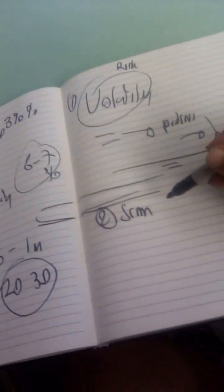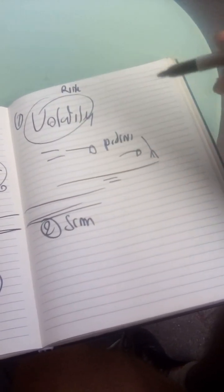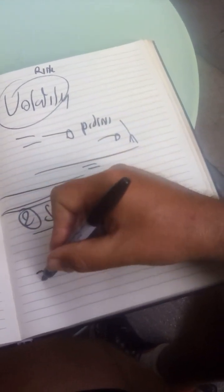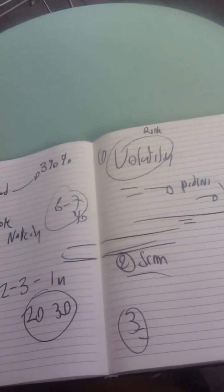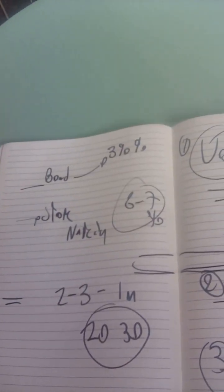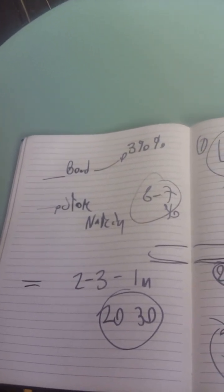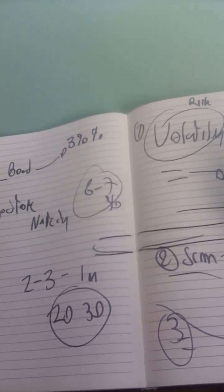The second risk is the scams. There's a lot of scams in the space, so a lot of the exchanges are false, some of the coins will eventually disappear. You have to invest in the right places. The third risk associated with cryptocurrency is... I cannot right now think about the third risk. So these are the first two risks that we have.